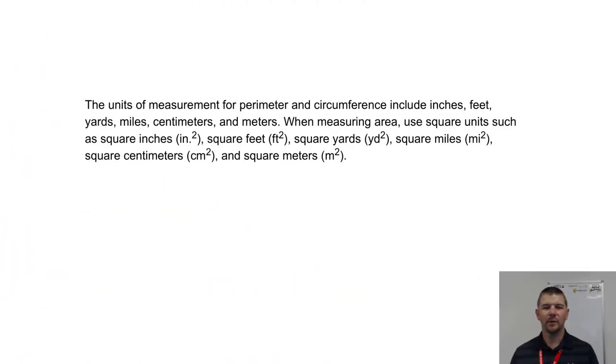The units of measurement for perimeter and circumference include inches, feet, yards, miles, centimeters, and meters. When measuring area, use square units, such as square inches, square feet, square yards, square miles, square centimeters, and square meters.